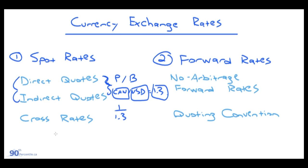Cross rates basically allow us to imply rates for a currency we don't have by multiplying direct or indirect quotes available in the market. Through some examples you'll see that if you multiply a bunch of rates, some stuff cancels out and we can find the rate we're looking for.